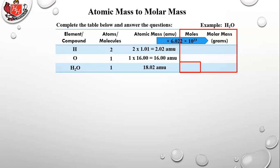To convert to moles, all the numbers stay the same — only the unit for mass changes from amu to grams. So we have two moles of hydrogen, one mole of oxygen, producing one mole of water: 2.02 grams of hydrogen and 16 grams of oxygen for a total molar mass of 18.02 grams of water. The 'one mole of water' value in the table is the reference — if you want two moles of water, double all the other numbers; for three moles, multiply by three.